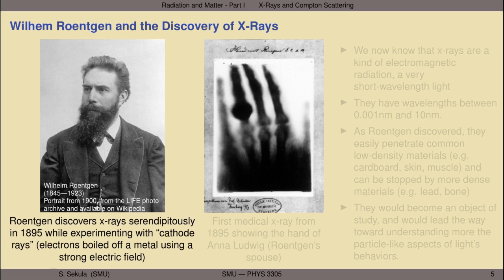One of the things that he observed during his experiments was that if he allowed the x-rays to pass through his hand, it would cast a shadow on a screen behind the hand that showed only the bones of his hand. This led to him attempting to make the first medical x-ray in 1895. He used the hand of his then spouse, Anna Ludwig.